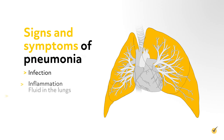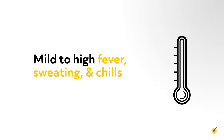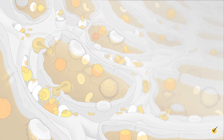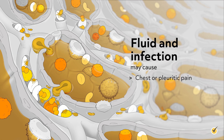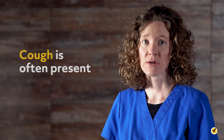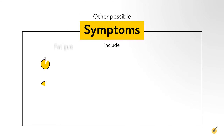Alveoli that are already filled with liquid are unable to fill with air during inspiration, which subsequently impairs gas exchange. Infection, inflammation, fluid in the lungs, and impaired gas exchange are responsible for most of the signs and symptoms of pneumonia. Mild to high fever, sweating, and chills may be present as the body tries to fight infection. Fluid and infection may cause chest or pleuritic pain and shortness of breath, especially with exertion. Cough is often present and possibly productive as the patient tries to clear the airway.